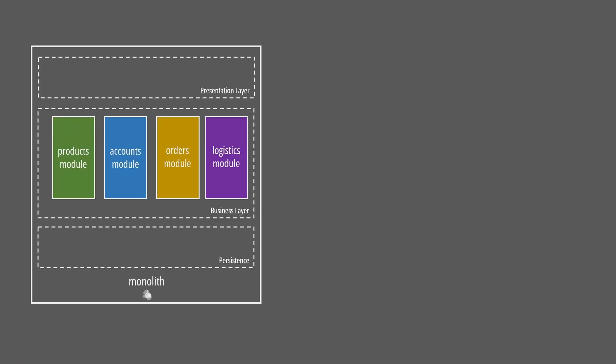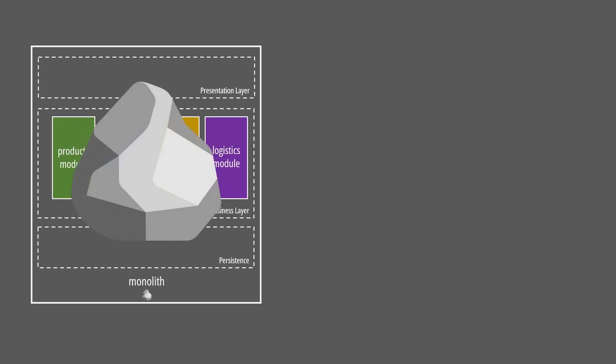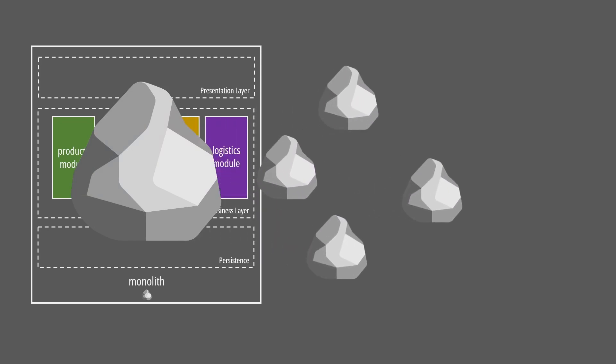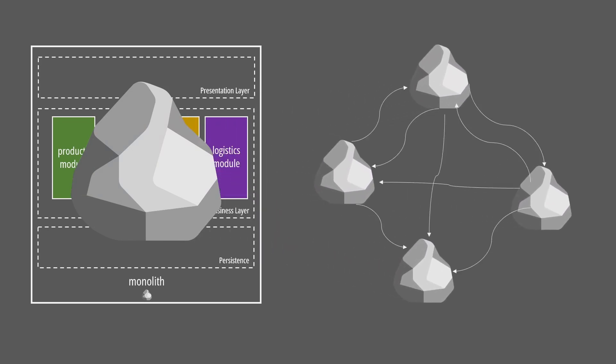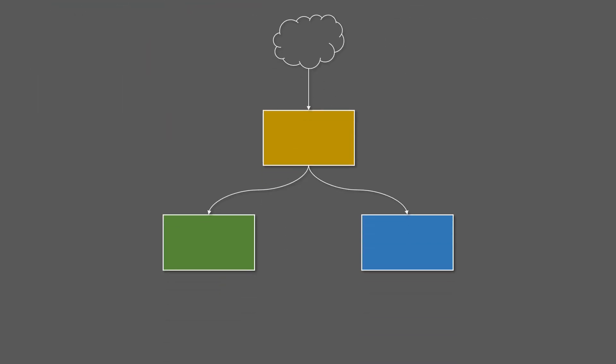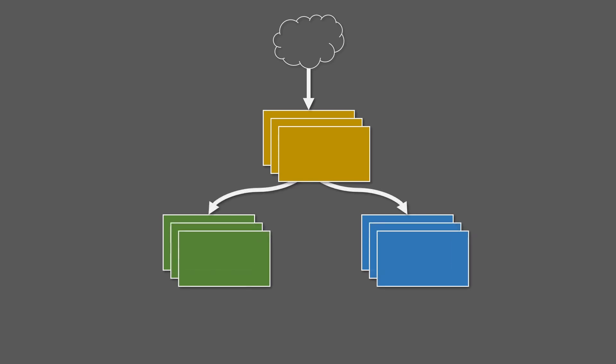What we are trying to avoid is building a distributed monolith — a system where services depend on each other and thus cannot be developed or operated independently. These systems are pointless as they pay the cost of microservices without getting any benefit. For instance, a distributed monolith is not elastic: if we experience a spike of requests to microservice A, but it is highly coupled with B and C, we will be forced to increase the number of replicas for all three services.